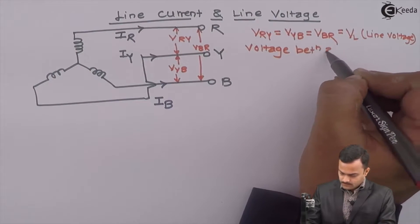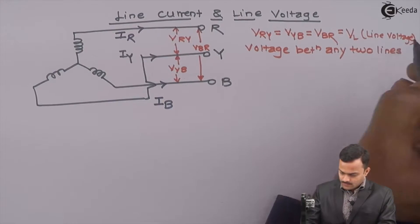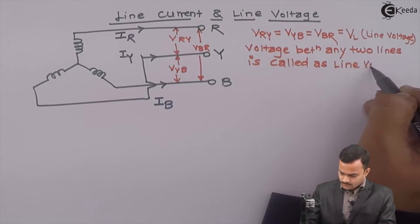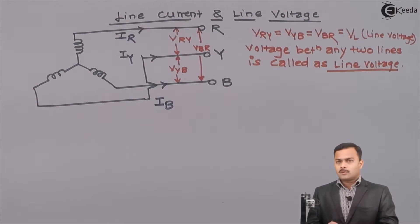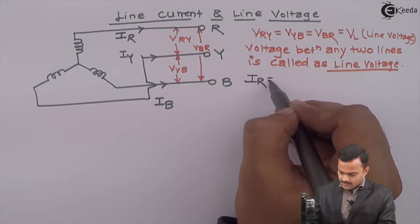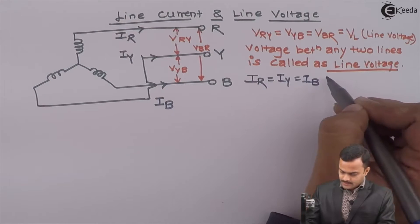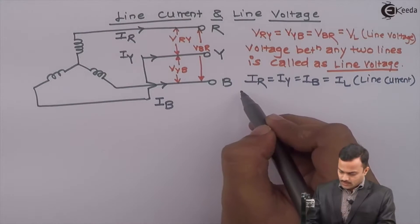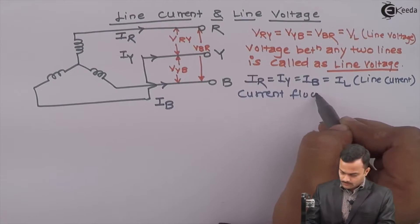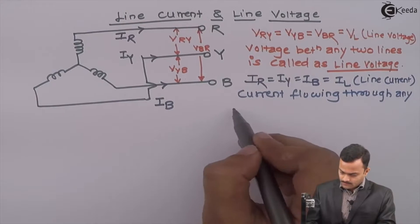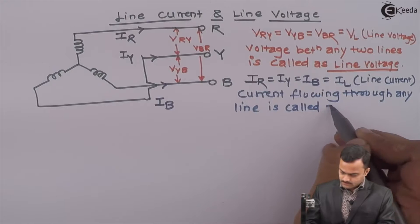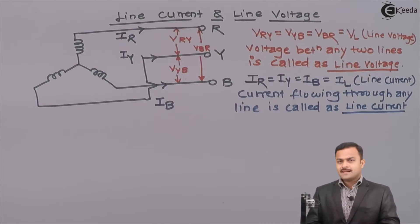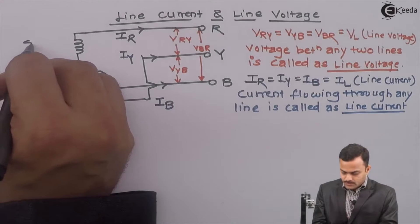Voltage between any two lines is called as line voltage. And in this diagram, IR is same as IY is same as IB, which is nothing but IL — the line current. So current flowing through any line is called as line current.